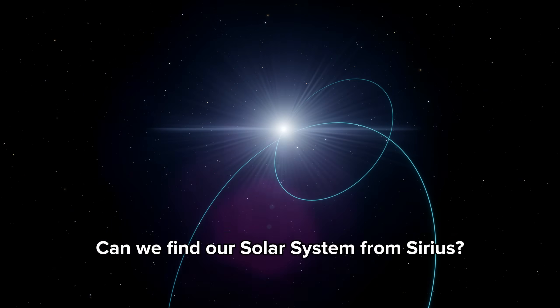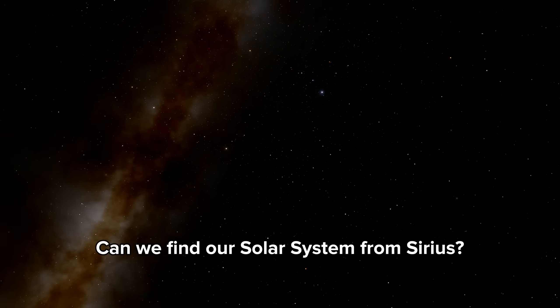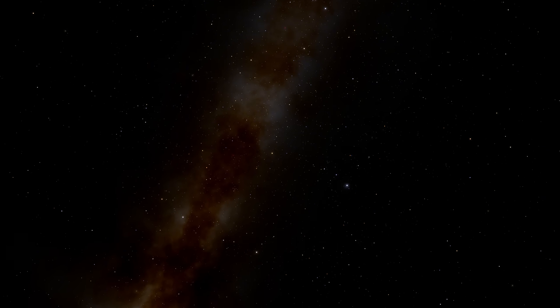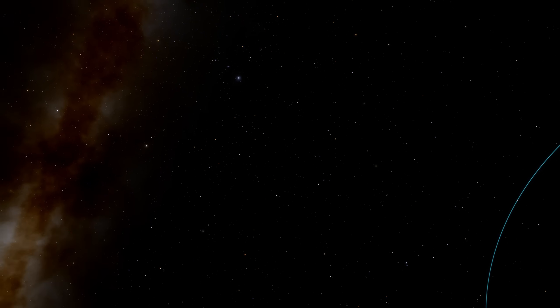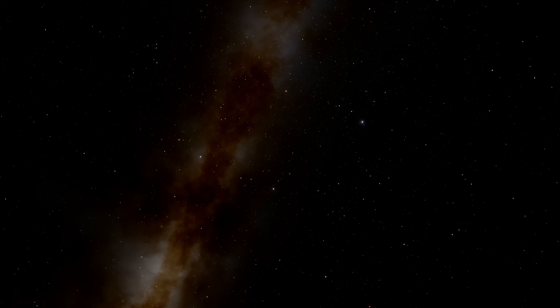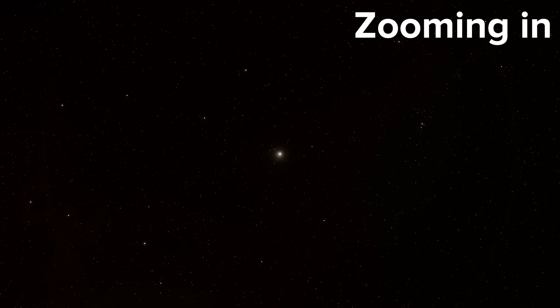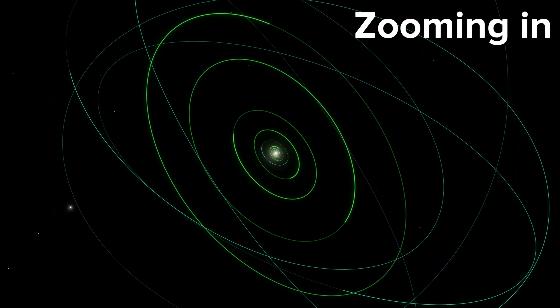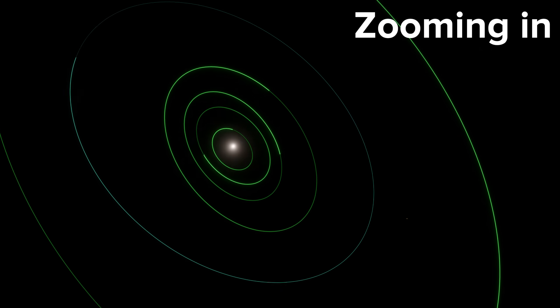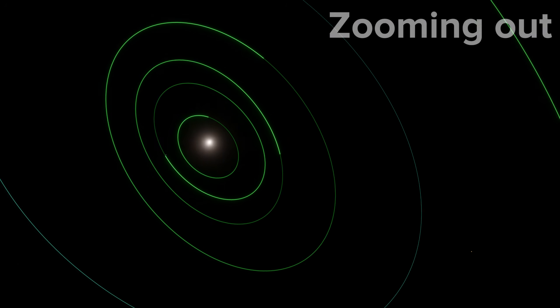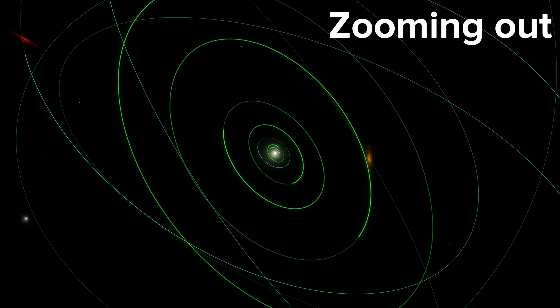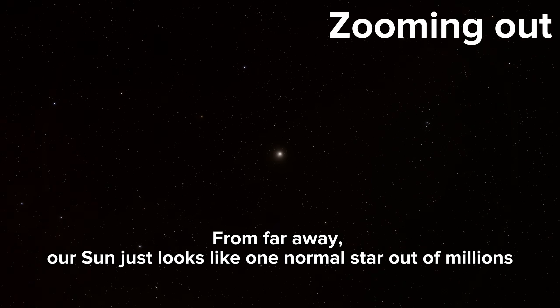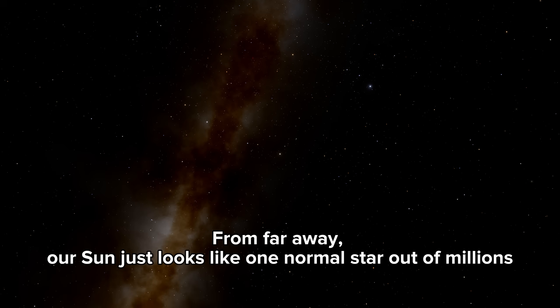Can we find our solar system from Sirius? From far away, our sun just looks like one normal star out of millions.